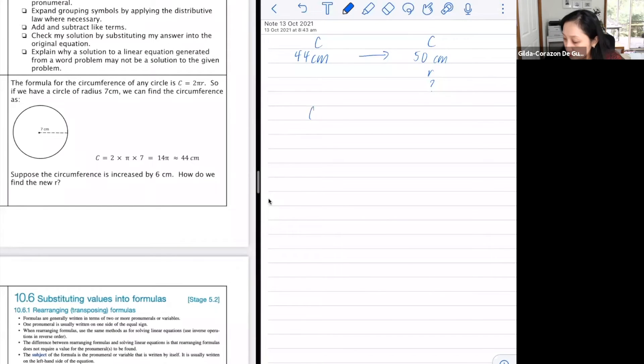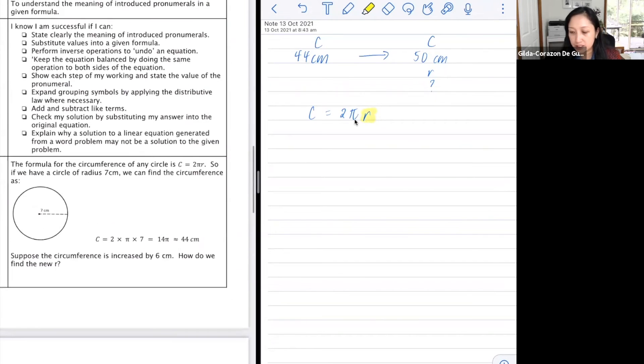So what we want to do would be to use that formula, 2 times π times r. But then what we want would be, instead of C by itself, we want r by itself. So how do we have r by itself? We want to get rid of the 2, we want to get rid of the π. So if we look at our learning intention, it says perform the inverse operation. So this means it's 2 times π times r, what we want to do is to do the reverse. What's the reverse of multiplying? We want to divide.